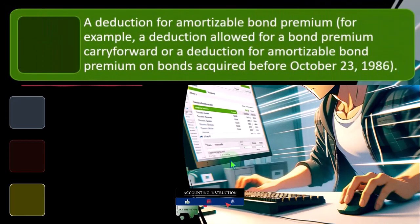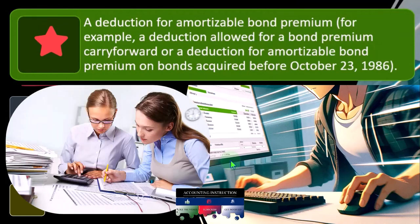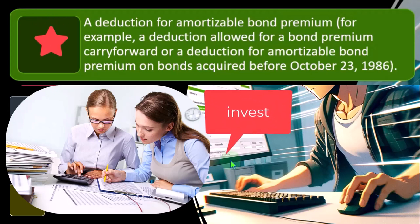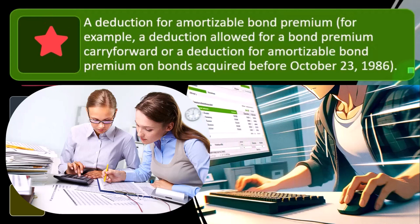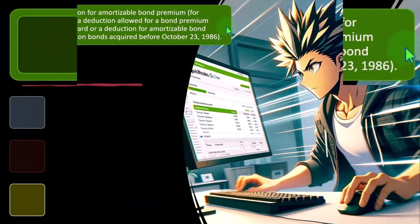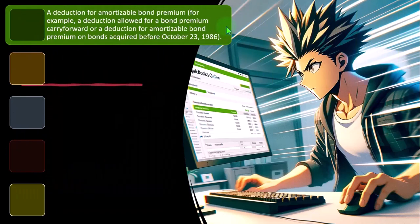There's also a deduction for an amortizable bond premium — for example, a deduction allowed for a bond premium carry-forward, or a deduction for amortizable bond premium on bonds acquired before October 23, 1986. This is somewhat unusual for most people, because most people invest through a retirement plan like an IRA or 401(k), typically using mutual funds and ETFs rather than purchasing bonds directly. But if you're a trader purchasing and selling bonds directly, you can get into the idea of amortizing the bond premium, and that's when this situation becomes relevant.